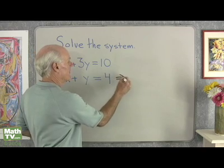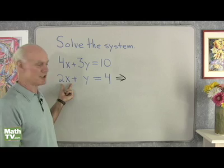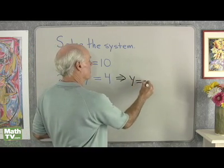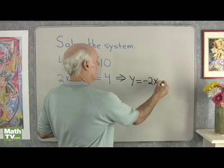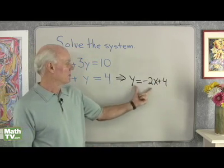So when I do that, solve this equation for y, I'm just simply going to add negative 2x to both sides. So I end up with y is equal to negative 2x plus 4. So that's an equation equivalent to this one right here.